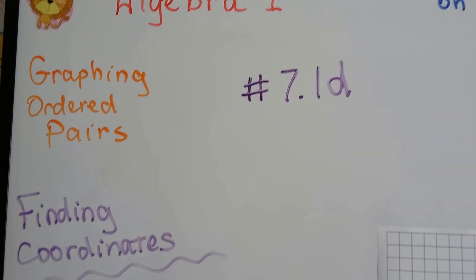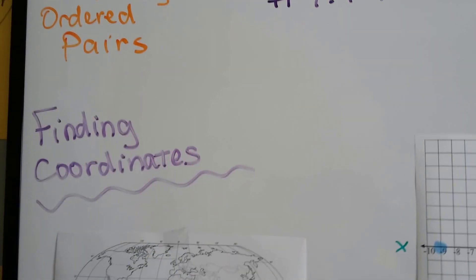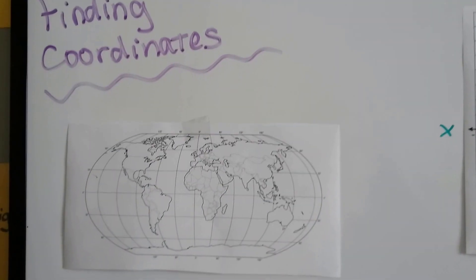Algebra 1, 7.1d. This is going to be the end of this unit. I'm going to talk about finding coordinates.